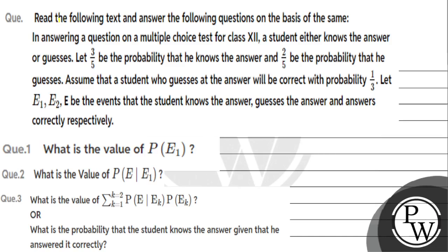Let's read the question. In answering a question on a multiple choice test in class 12, a student either knows the answer or guesses. Let 3/5 be the probability that he knows the answer and 2/5 be the probability that he guesses. Assume that a student who guesses the answer will be correct with probability 1/3. Let E1, E2, and E be the events that the student knows the answer, guesses the answer, and answers correctly, respectively.